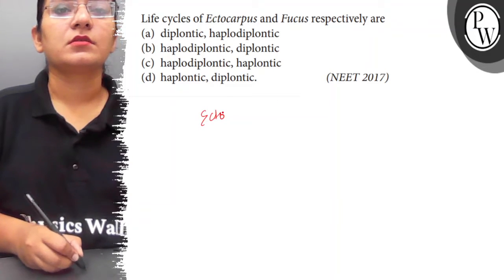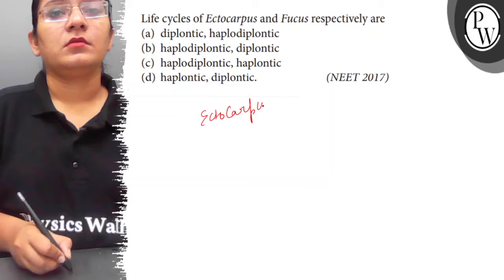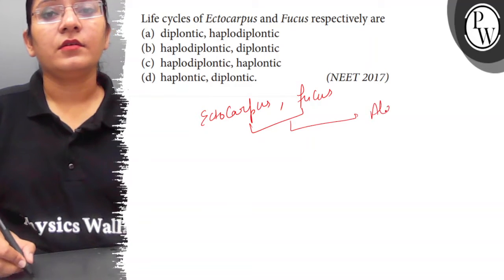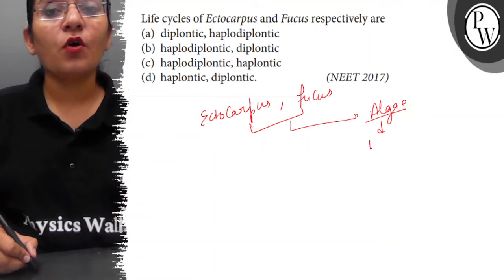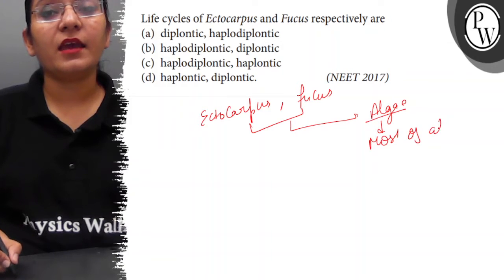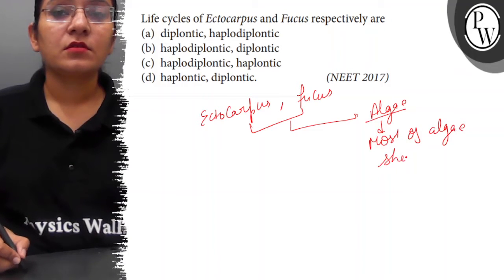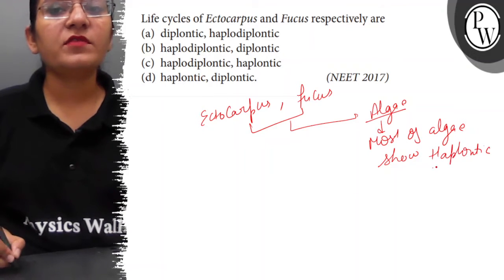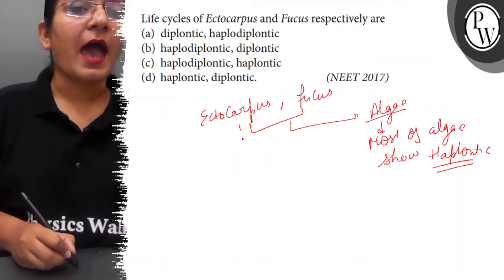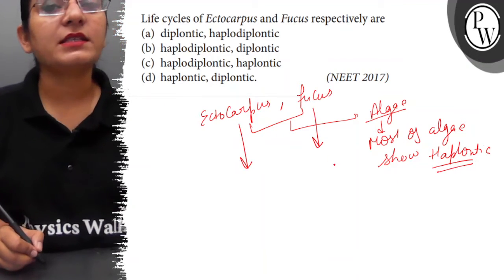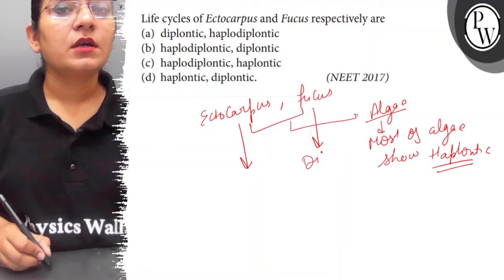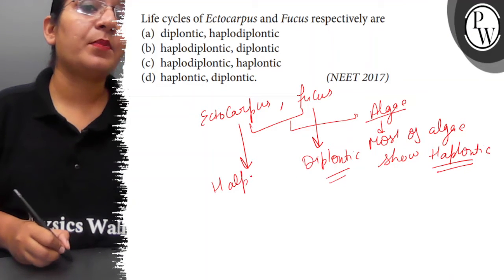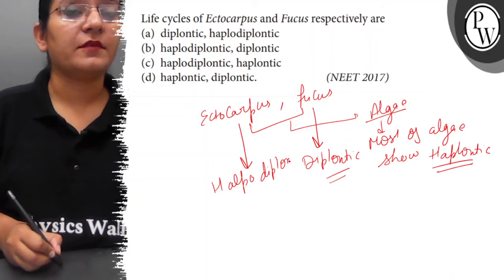If you understand, Ectocarpus and Fucus — both of these are algae, and you know most of algae shows haplontic life cycle. But Ectocarpus and Fucus are two exceptions, in which Fucus shows diplontic life cycle and Ectocarpus shows haplodiplontic life cycle.